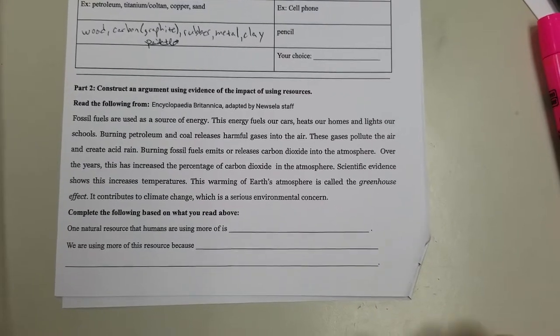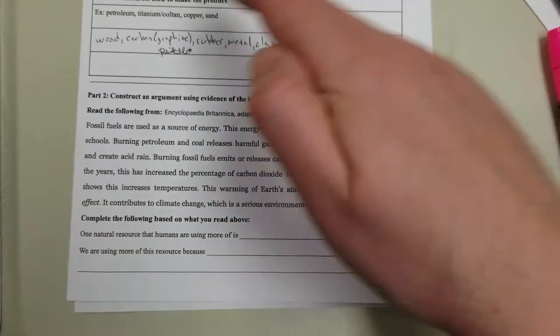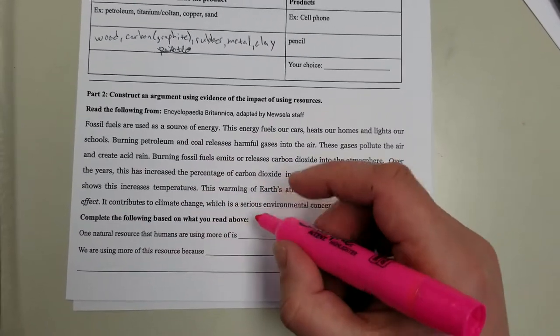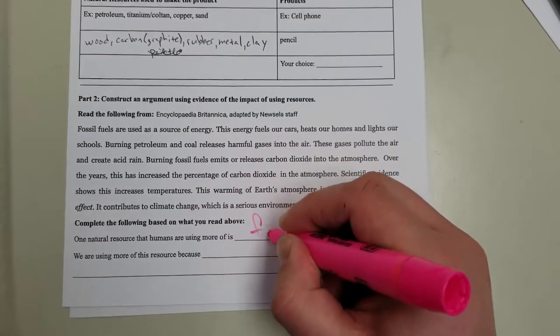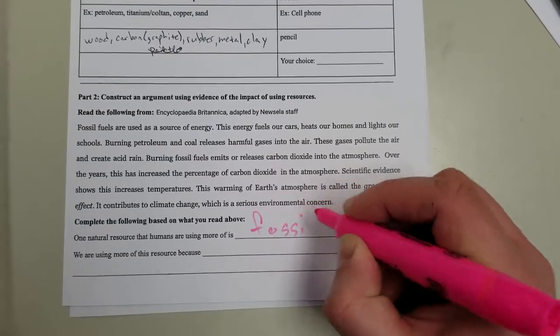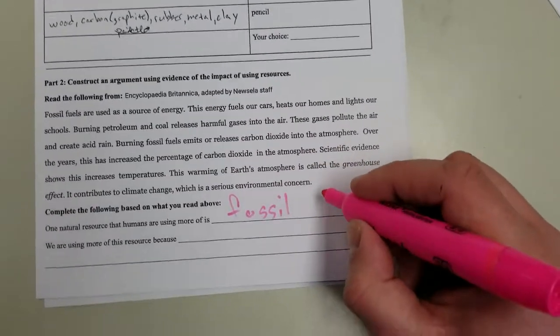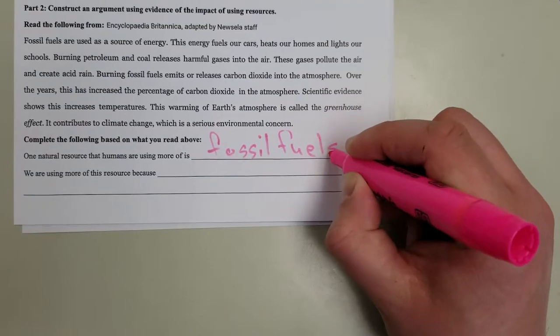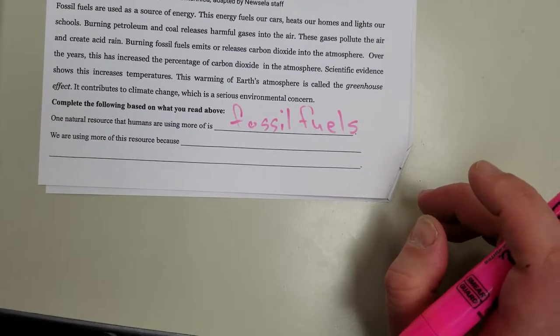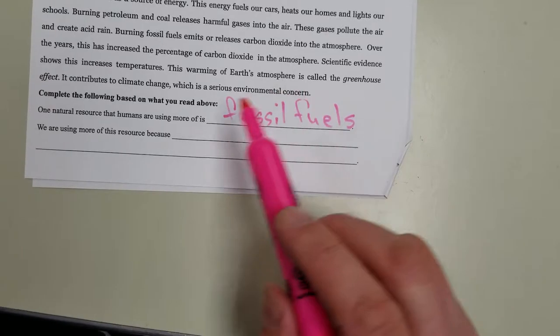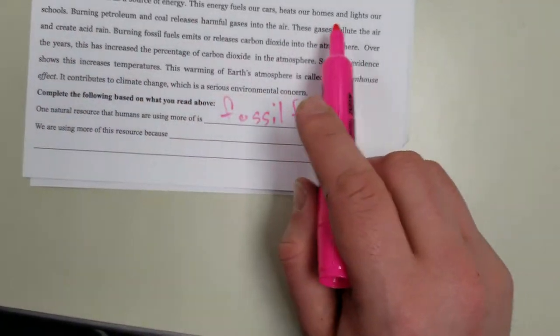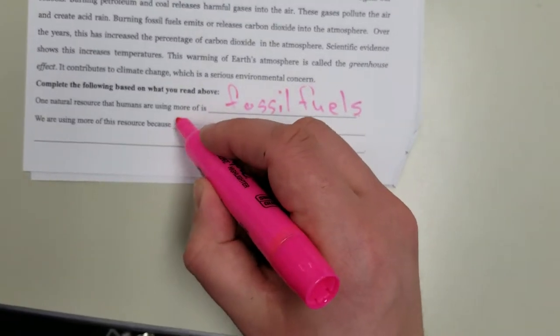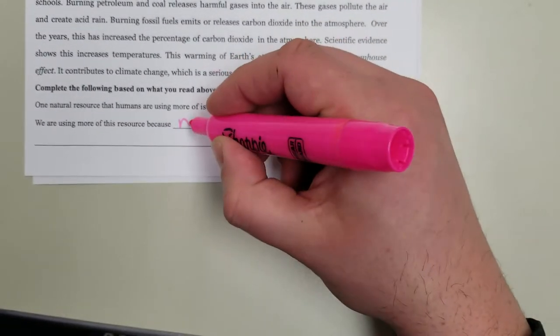One natural resource that humans are using more of is, based on this here, fossil fuels. We're using more of this resource because it fuels our cars, heats our homes, lights our schools. So we need more energy.